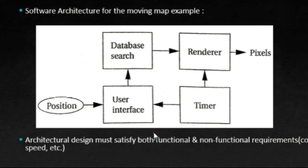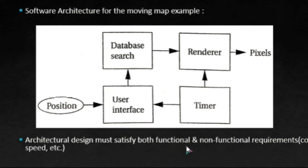One last point to note in the architecture design phase is that any architecture should satisfy both functional and non-functional requirements. Functional requirements include things like the GPS receiving function, and non-functional requirements include cost, speed, etc. So this is about the architecture design phase.